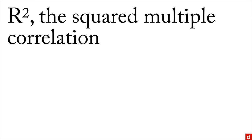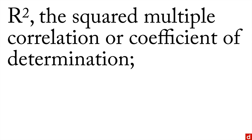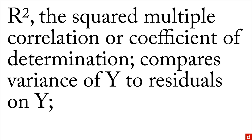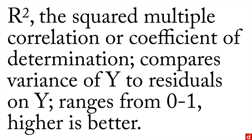First off is R-squared, also called the squared multiple correlation or the coefficient of determination. What it does is compare the variance of Y — if you have an outcome variable, it looks at the total variance of that and compares it to the residuals on Y after you've made your prediction. Scores on R-squared range from 0 to 1, and higher is better.